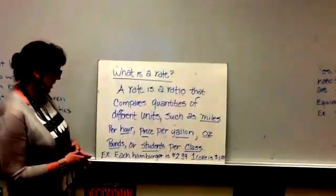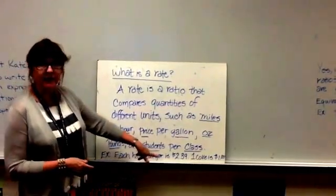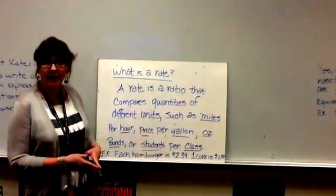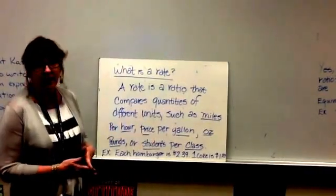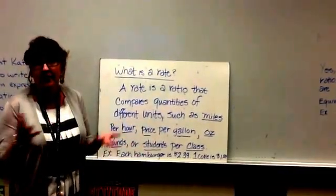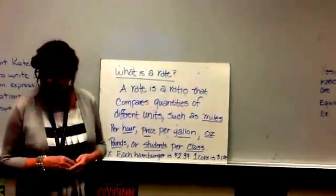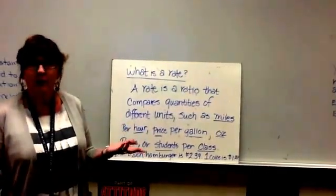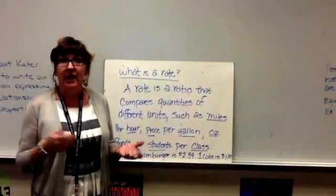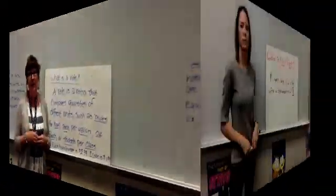A couple of examples of rate would be like each hamburger is $2.39, so one hamburger is $2.39. Or one Coke is a dollar, especially at McDonald's if you get the big Coke, they're a dollar. But that talks about unit rates and rates, and now Ms. Hennebree is going to talk to you about more about rates.